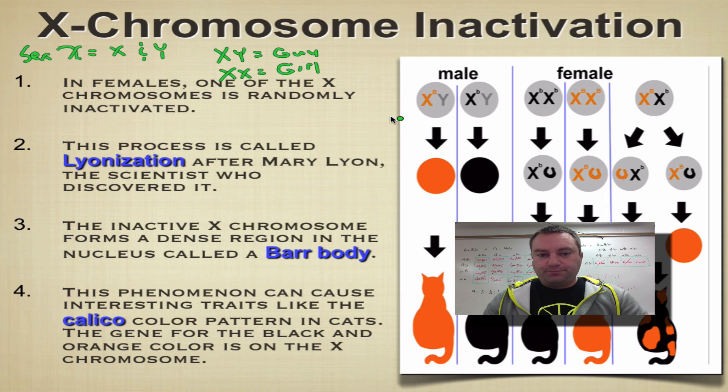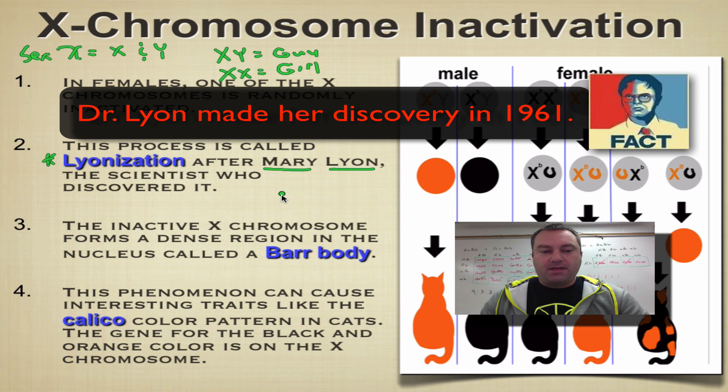What the girls will do is they will inactivate one of these X chromosomes in a process called lyonization, which is named after a semi-famous scientist named Mary Lyon.